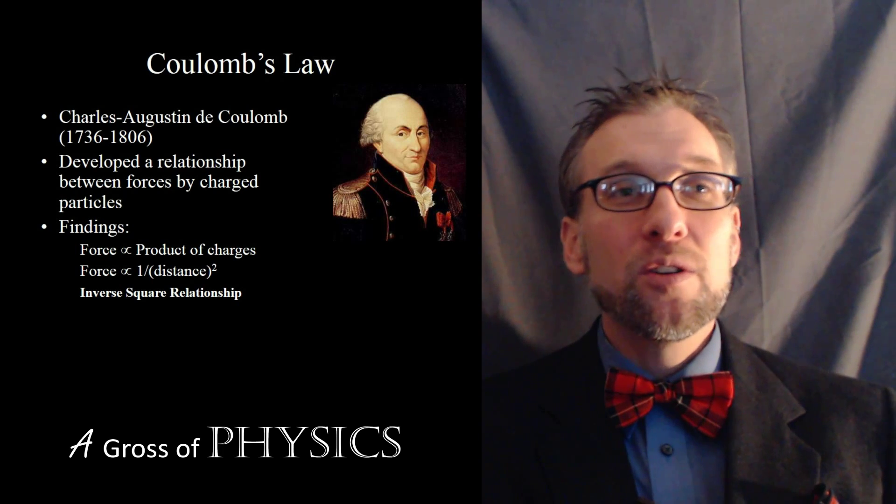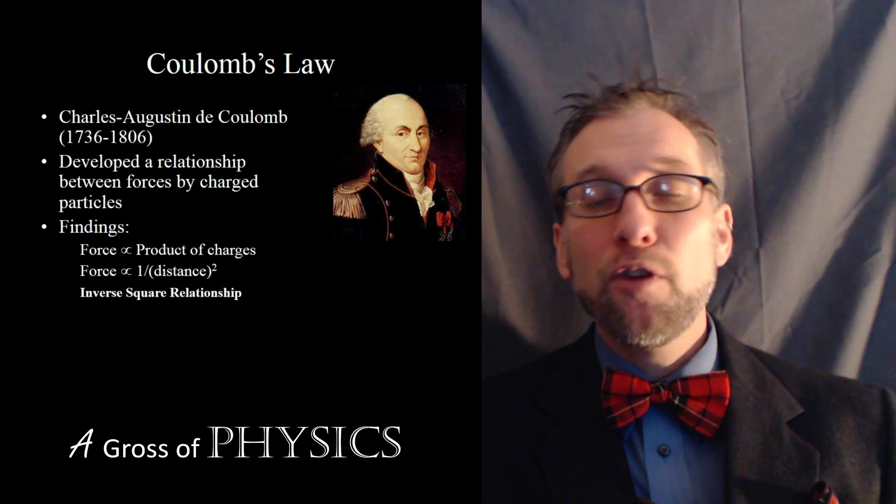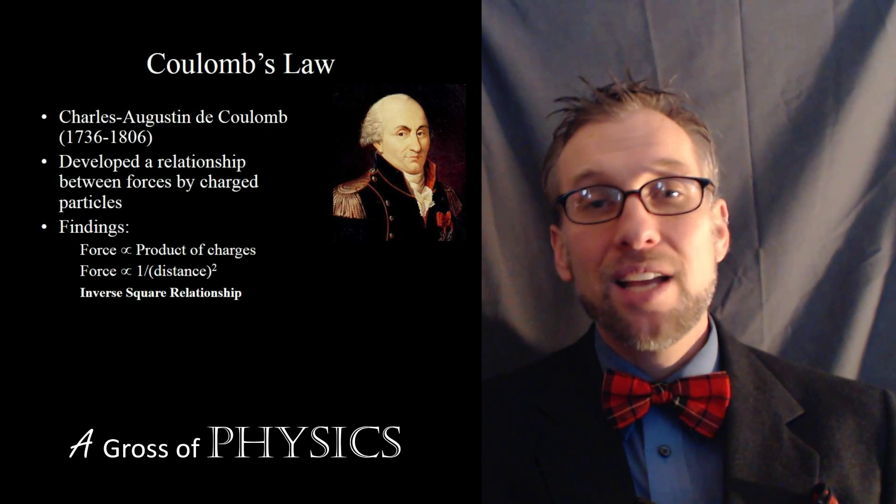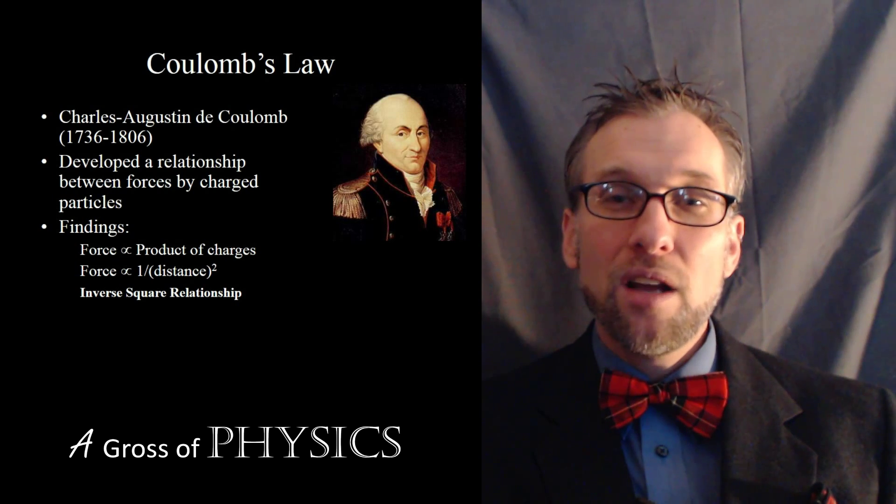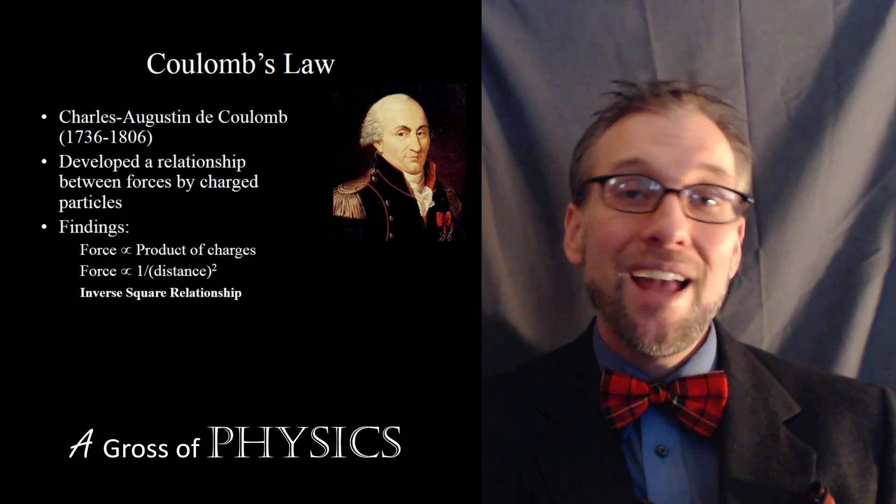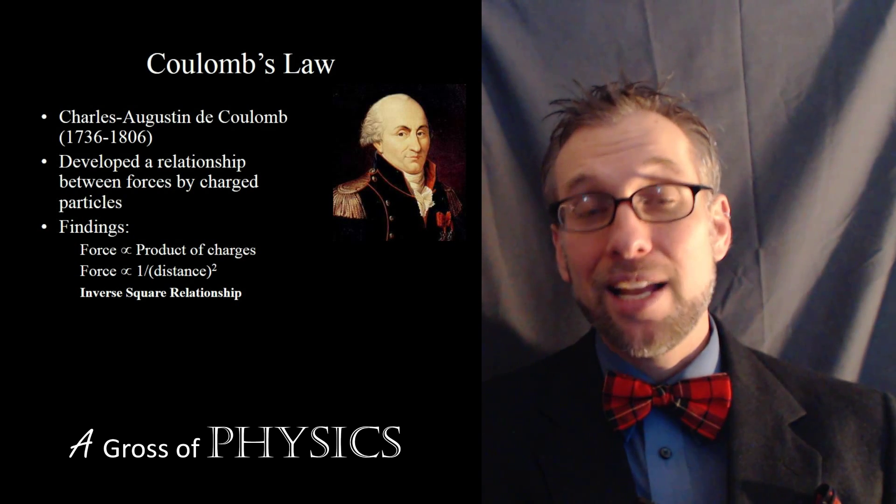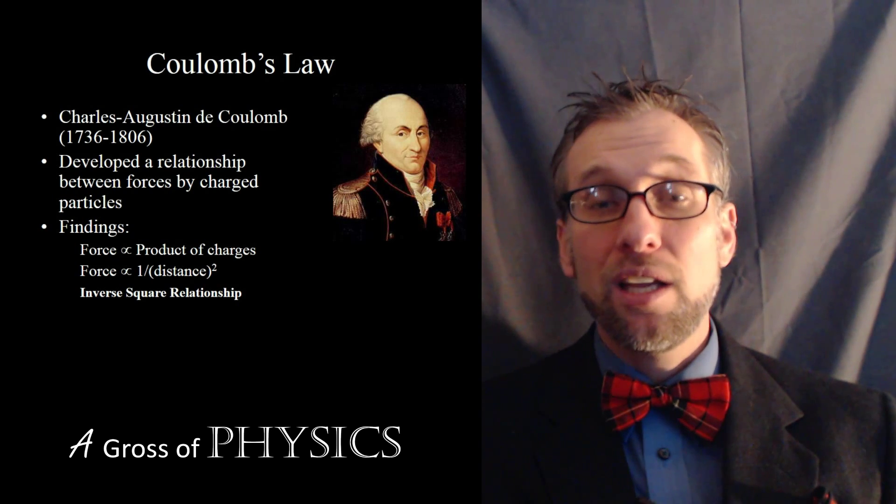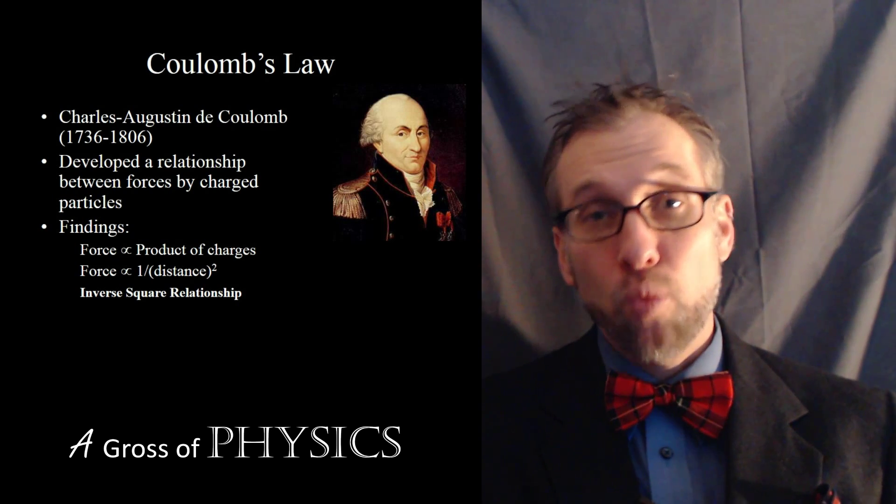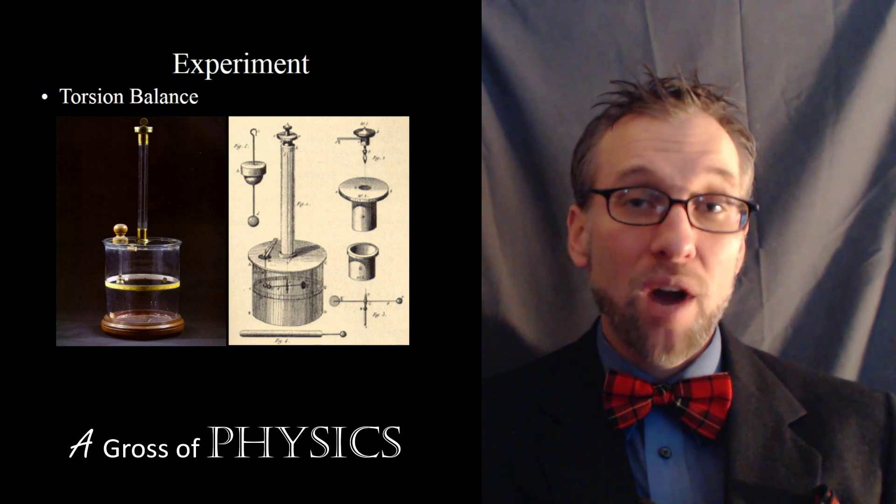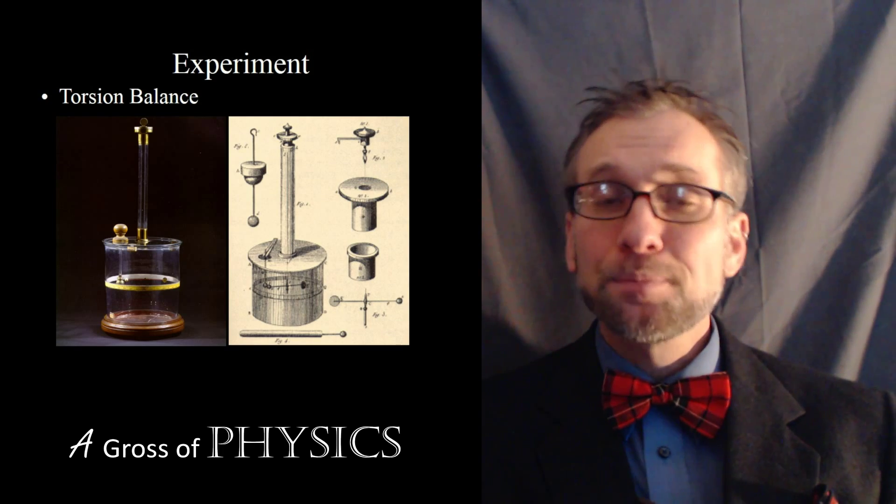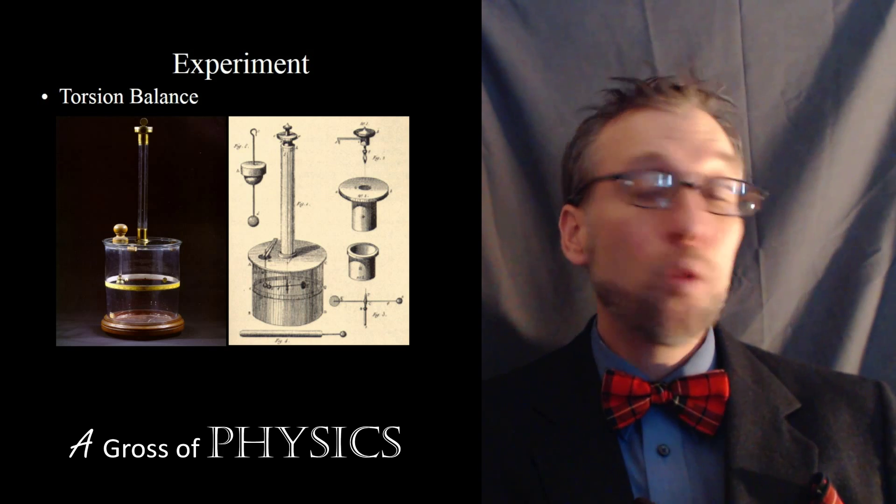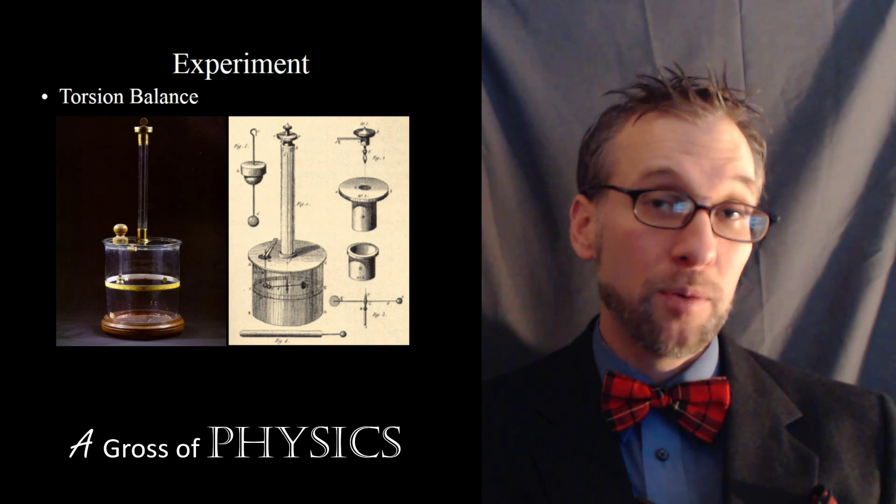Because charged particles have such small forces acting on them, it was difficult for Coulomb to figure this out. What he actually did was he built a torsion balance, which has a very small strand of string hanging vertically. On the end is a rod where he put the charged particles. He would notice that there was a rotation in the charged particle when he charged either the rods or a stationary object. From that he was able to determine ultimately the electrostatic constant.